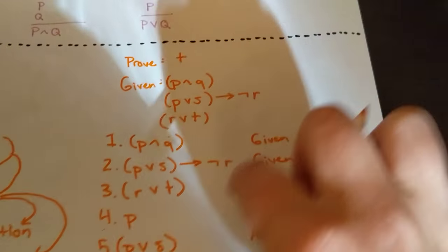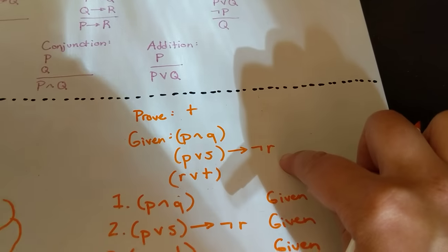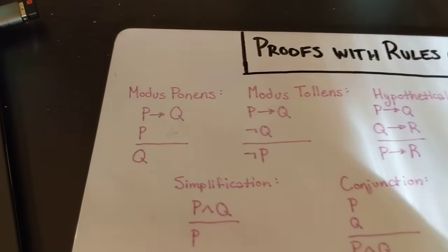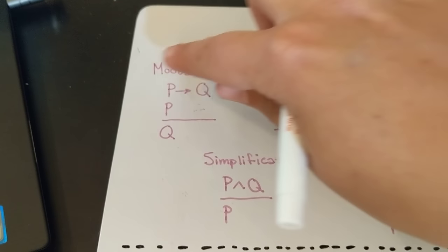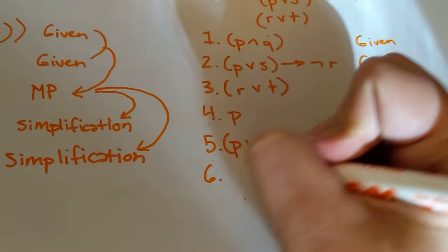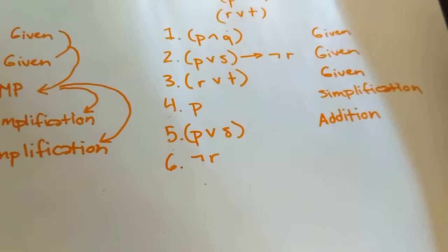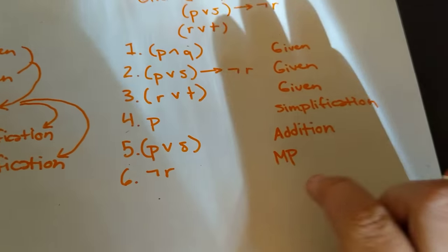And now that we know that P or S is true, and we know that this sentence is true as well, we can go up to our modus ponens again. So we know that P is true, and we know that P implies Q, then we know that Q is true. So we can say by modus ponens that not R is true.